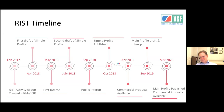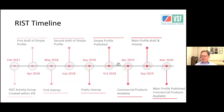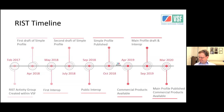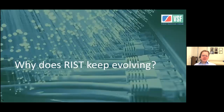The draft main profile was completed in September 2019, and the full second version — the main profile — was published in March 2020. So the question is: why does RIST keep evolving?